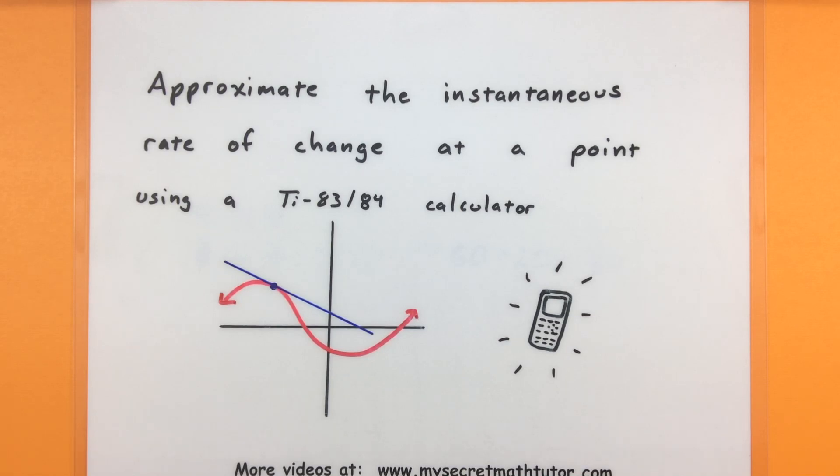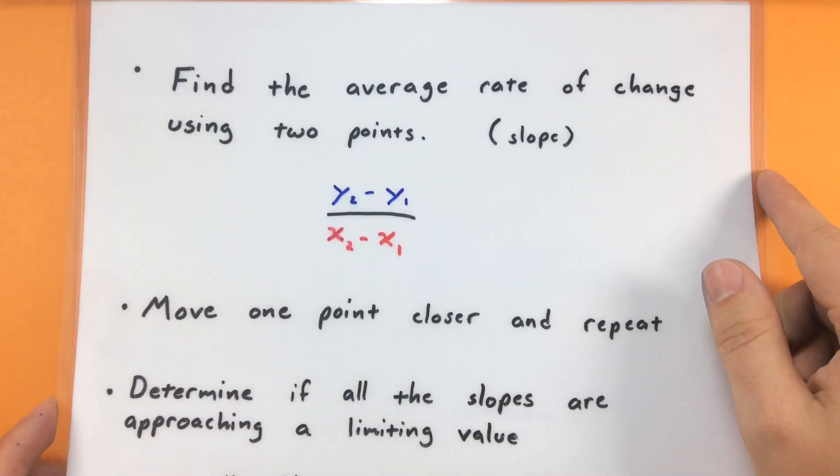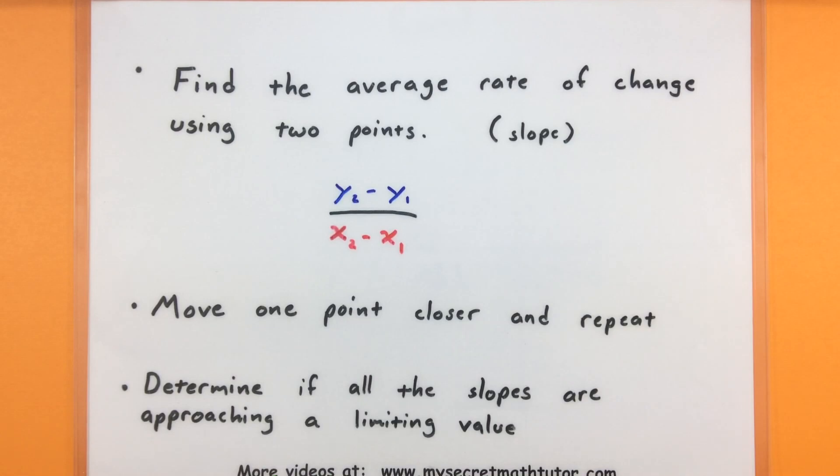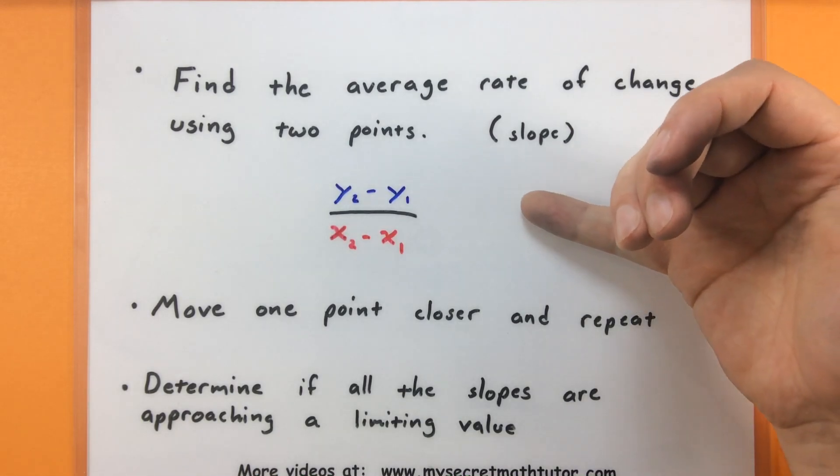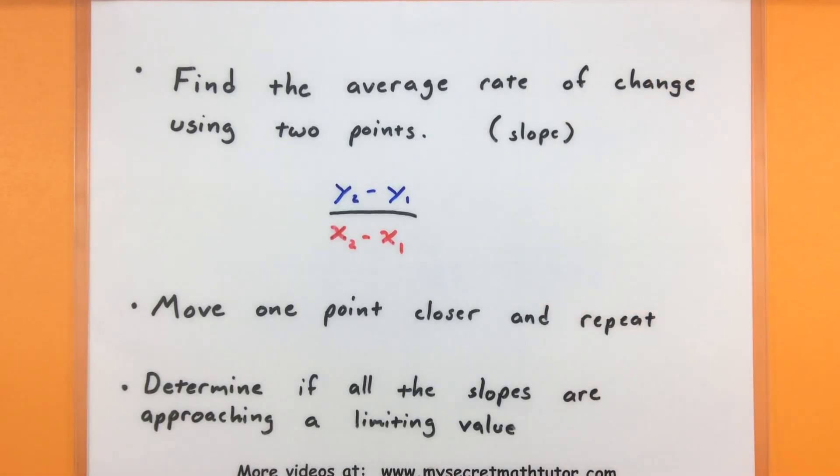This time, however, we'll use our TI-83 or 84 calculator to help us out in that process. So to find something like the instantaneous rate of change of a function, what you can do is actually pick two points and then find the average rate of change between those two points, or what we call the slope. Now, that won't give us the instantaneous rate of change, but if we move those points closer and closer together and repeat the process, it'll give us a good idea of what that instantaneous rate of change actually is.